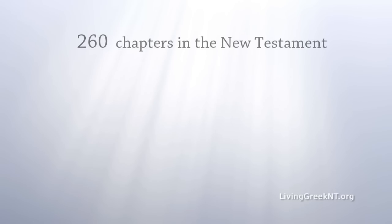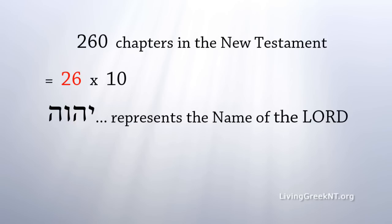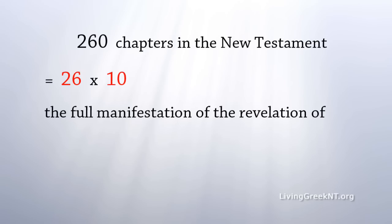To start, there are 260 chapters in the New Testament. 260 is 26 times 10. 26 is the numeric value of the Old Testament word spelled Yud-Heh-Vav-Heh in Hebrew, that represents the name of the Lord. Jesus is the Lord. In Hebrew thought, 10 is the full manifestation of an idea. So 26 times 10 — the full manifestation of the revelation of Jesus — is contained in the 260 chapters of the books of the New Testament.